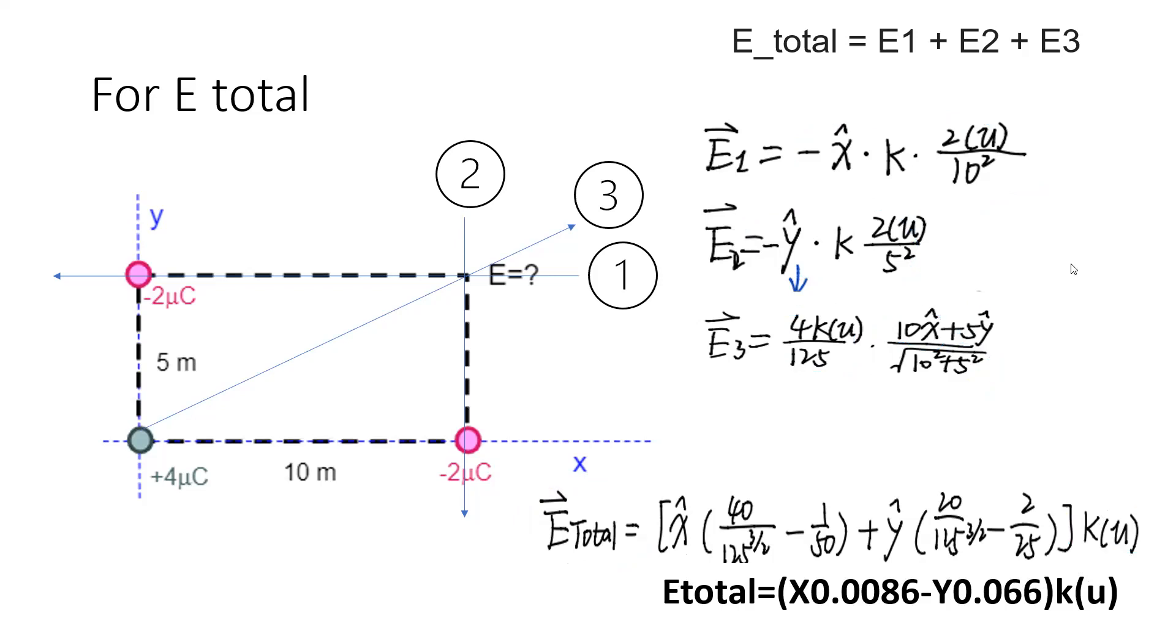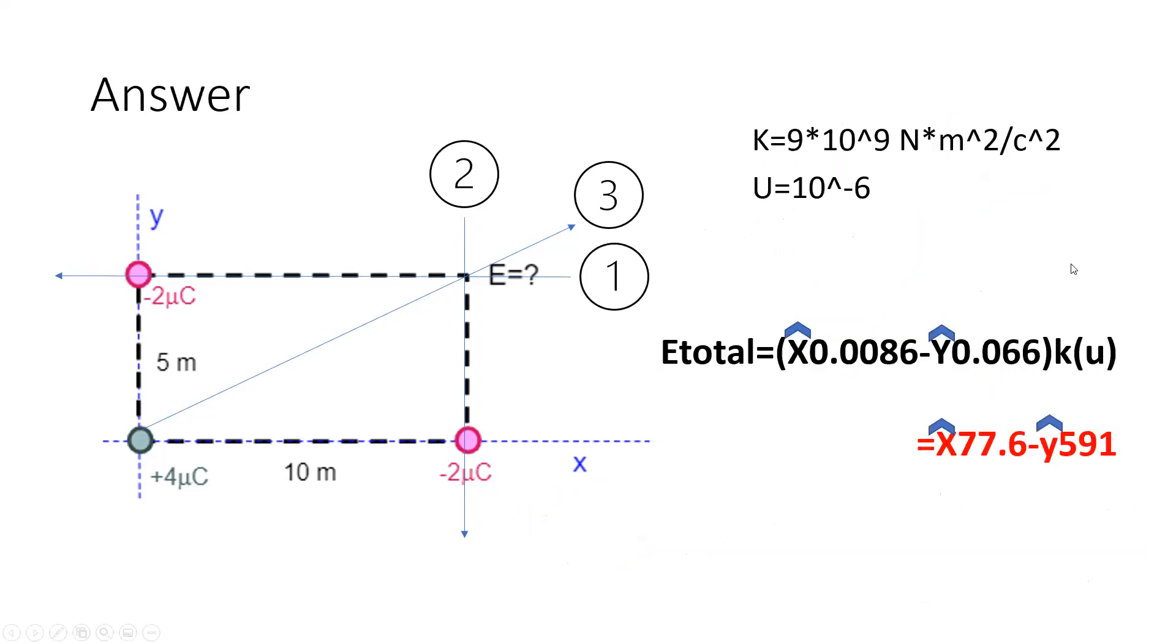In the final slide, we can see K equals 9 times 10 to the 9, and U is 10 to the negative 6.